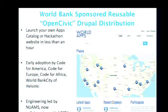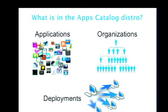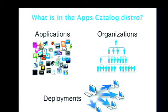We realized that applications catalogs and hackathons have a fair amount in common. A hackathon is a place where people come together to build applications to solve civic needs, and the catalog is a place where people go to find applications that have already been built to solve civic needs. With that realization, the goal became to build a distribution of Drupal that could be used to spin up multiple hackathon websites and multiple applications catalogs — so that anyone can use this to spin up a website to serve these needs in less than an hour.